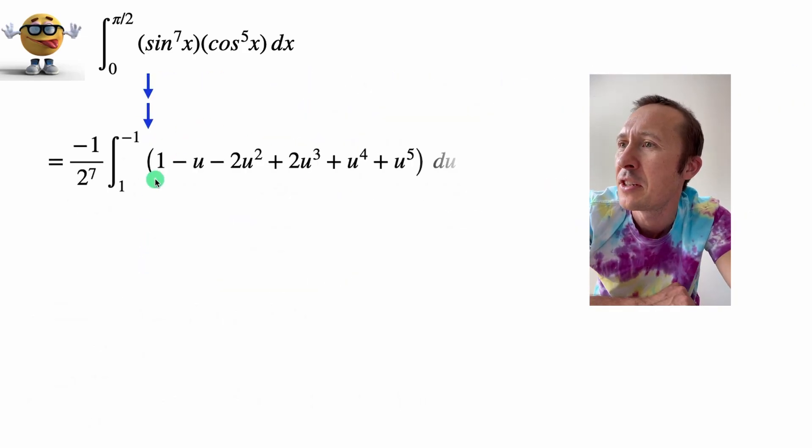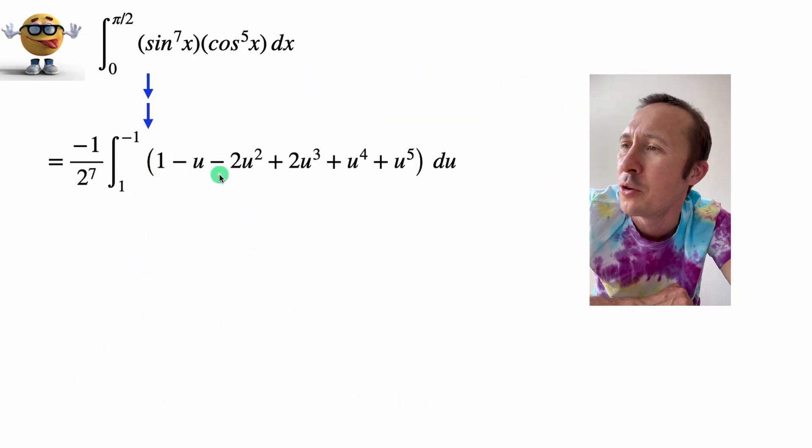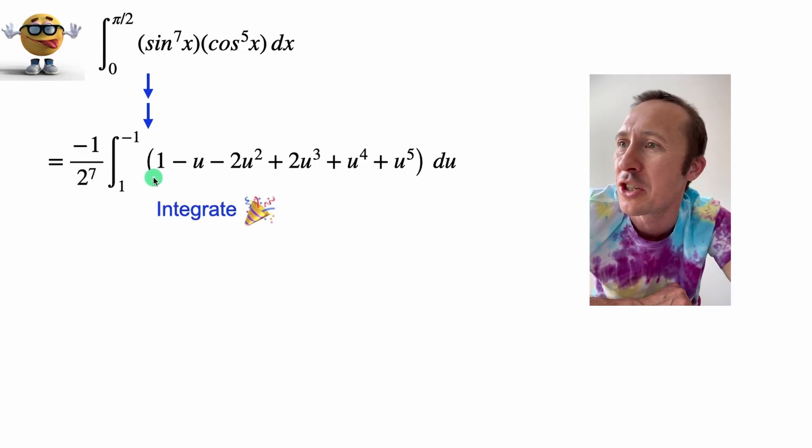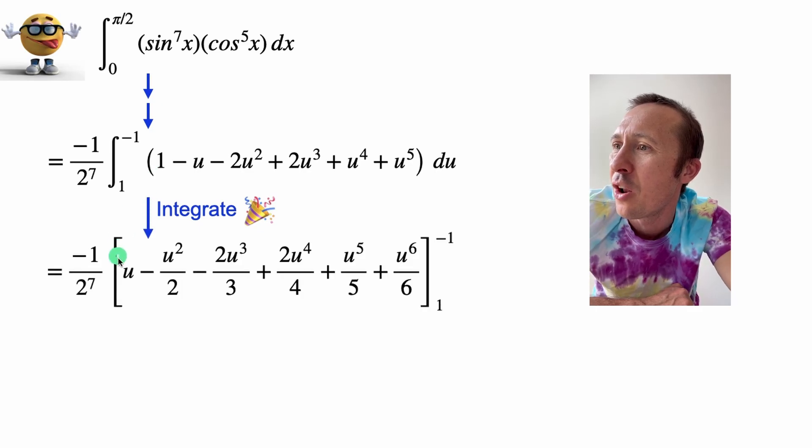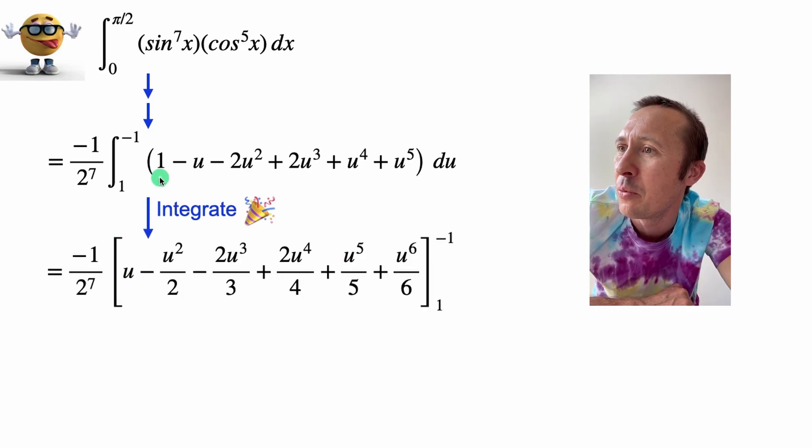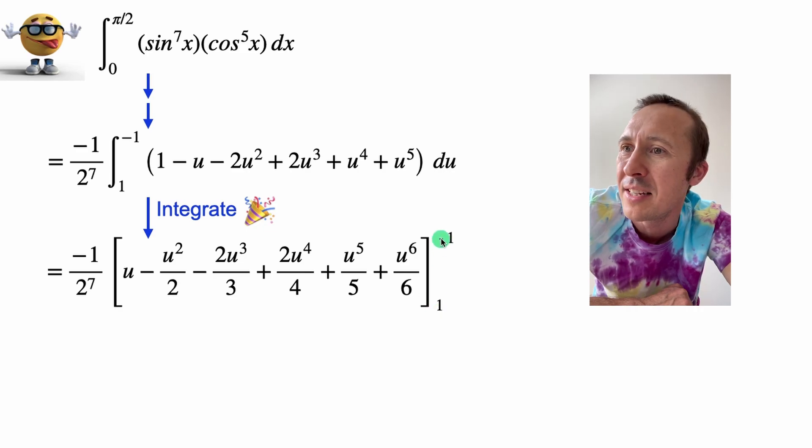Okay, and then if I just move this up to give ourselves some more room, at this point, I'm pretty happy, because we can now reverse power rule each of these terms. So we can integrate all of them. The integral of one is u, integral of u is one half u squared, and so on and so forth, evaluated from one to negative one.